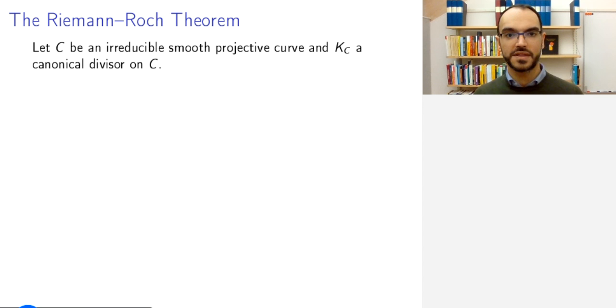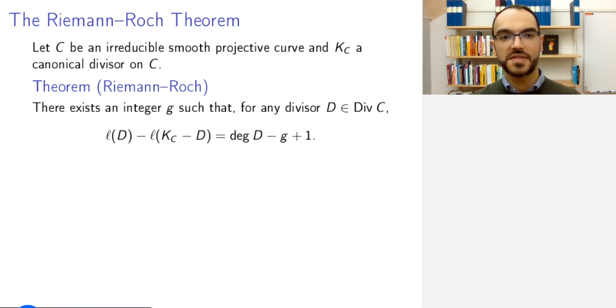If C now is an irreducible, smooth projective curve, and K_C a canonical divisor on C, then the Riemann-Roch theorem states that there exists an integer g, such that for any divisor D, ℓ(D) - ℓ(K_C - D) is equal to the degree of D minus this integer plus 1.